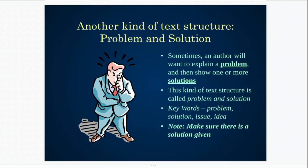Let's look at another kind of text structure: problem and solution. Sometimes the author wants to explain a problem, and then after they explain that problem, they're going to show one or sometimes more than one possible solution. You will know it's problem and solution when you see words like problem, solution, issue, or idea. But make sure when you're reading, if you see those signal words, that a solution is given — that you are reading the solution in the passage.